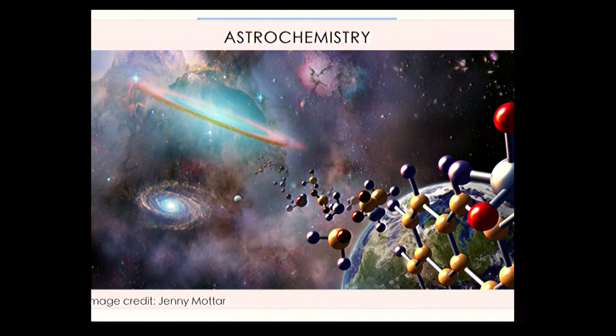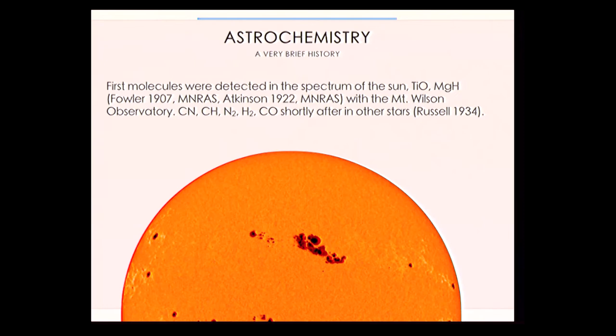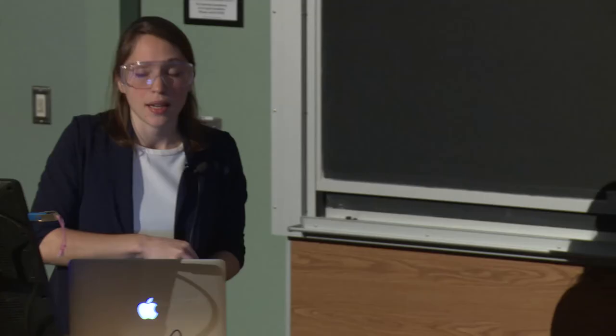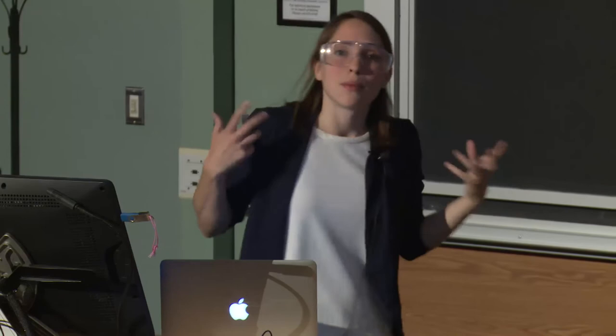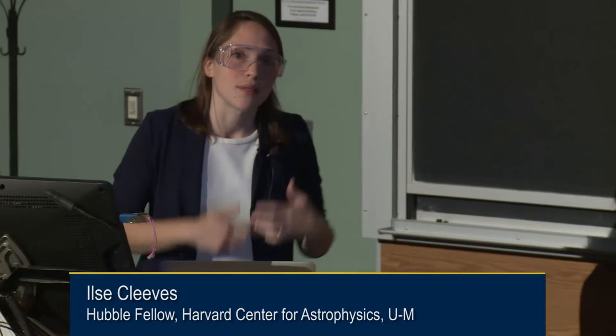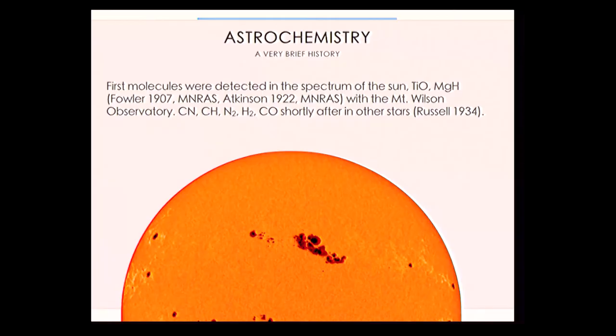Astrochemistry is a very new field. The first molecules were discovered over 100 years ago, in the spectrum of star spots in the sun — titanium oxide, magnesium hydride — discovered at the Mount Wilson Observatory, the famous observatory where the expansion of the universe and dark matter were also discovered. Shortly after, more molecules were found in the spectra of stars: CN, CH, and H₂CO in the 1930s.